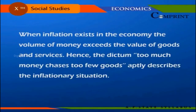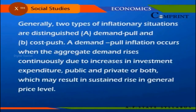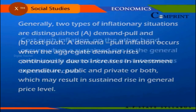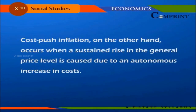When inflation exists in the economy, the volume of money exceeds the value of goods and services; hence the dictum 'too much money chasing too few goods' aptly describes the inflationary situation. Generally two types of inflationary situations are distinguished: demand-pull and cost-push. Demand-pull inflation occurs when aggregate demand rises continuously due to increases in investment expenditure, public and private or both, resulting in a sustained rise in the general price level. Cost-push inflation occurs when a sustained rise in the general price level is caused by an autonomous increase in costs.